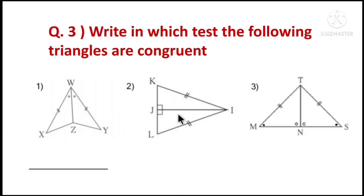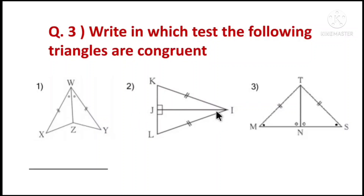Second part: In the figure there are two right-angle triangles. JI is the common side of two triangles. Therefore, hypotenuse is congruent and the common side is congruent. The test is the Hypotenuse-Side test.